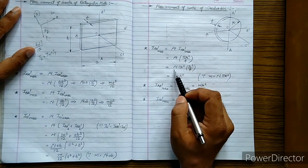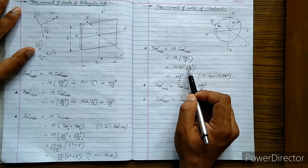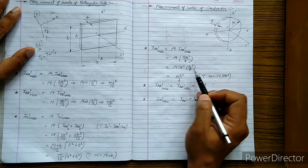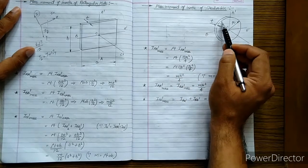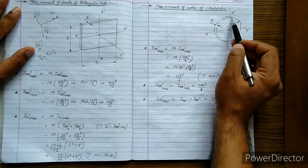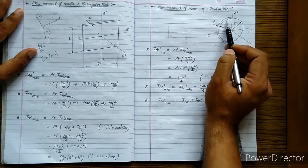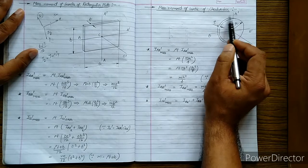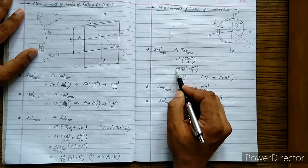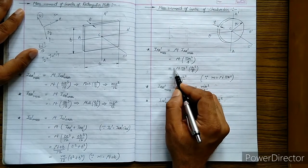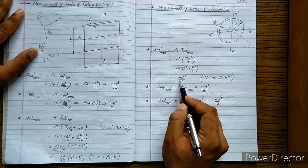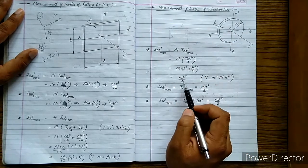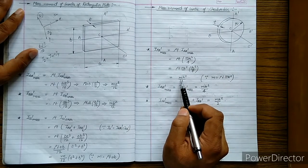We will take πr² common, so it becomes ρt × πr² × r²/4. Now, πr² is the area of the circular face. If you multiply that area by thickness t, that becomes volume. Then ρ times volume gives the mass of the circular disc. So we replace this term with M, the mass of the circular disc.